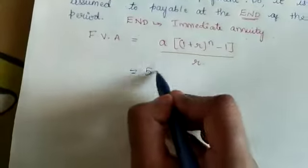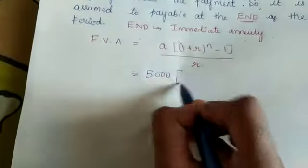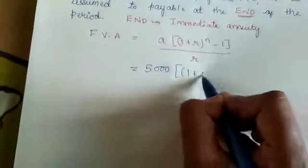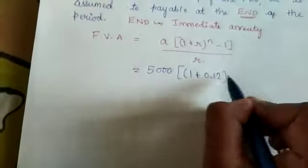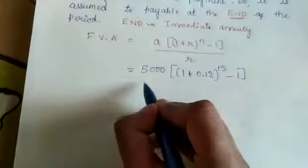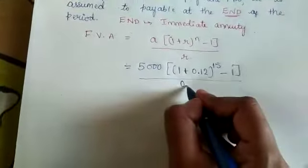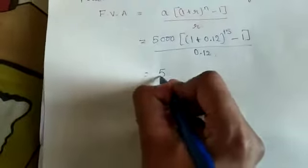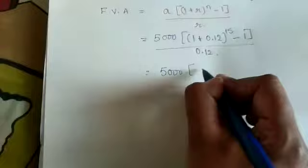The formula is A into (1 plus r) to the power of n minus 1 divided by r. So, A value is 5000, r value is 0.12, and n value is 15 years.